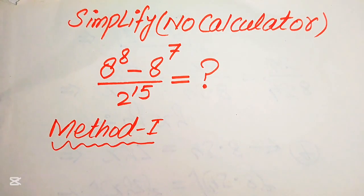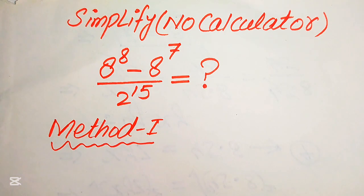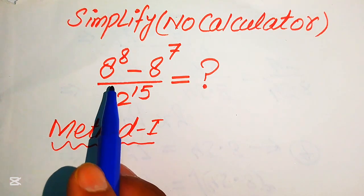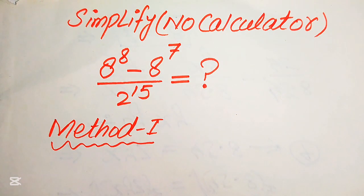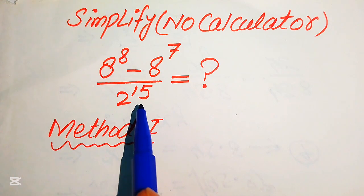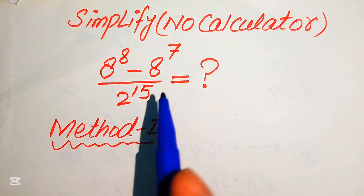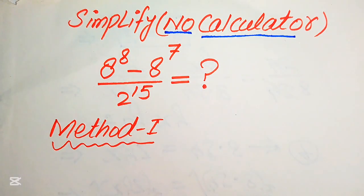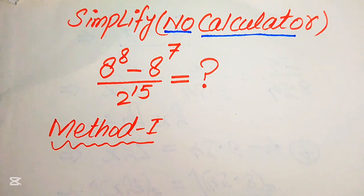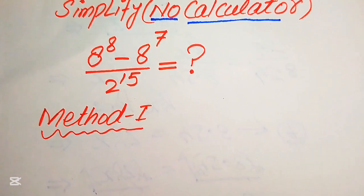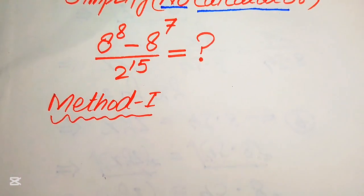Hello everyone. Today I want to show you how to simplify this nice algebraic expression. So if we have 8 to the power of 8 minus 8 to the power of 7, divided by 2 to the power of 15, we write this algebraic expression into the lowest form. Note that a calculator is not allowed in this problem — we will show all of the working on paper. We will solve this problem using two methods.